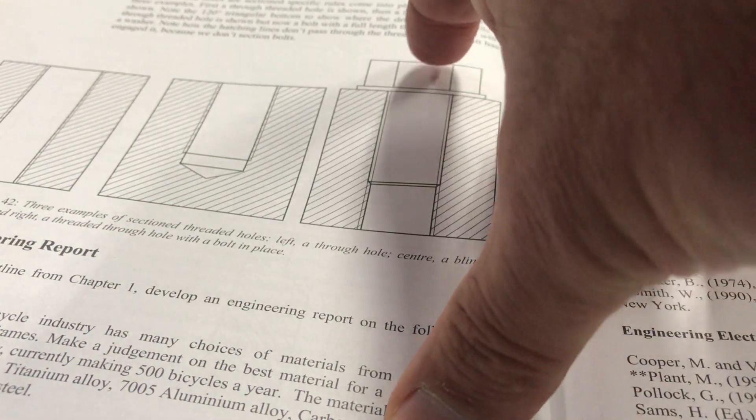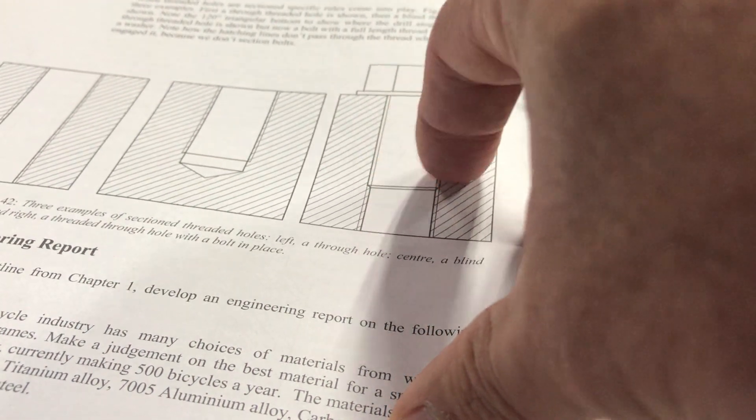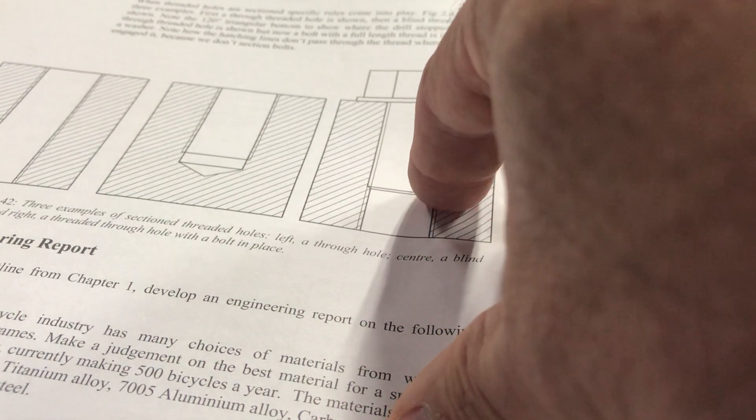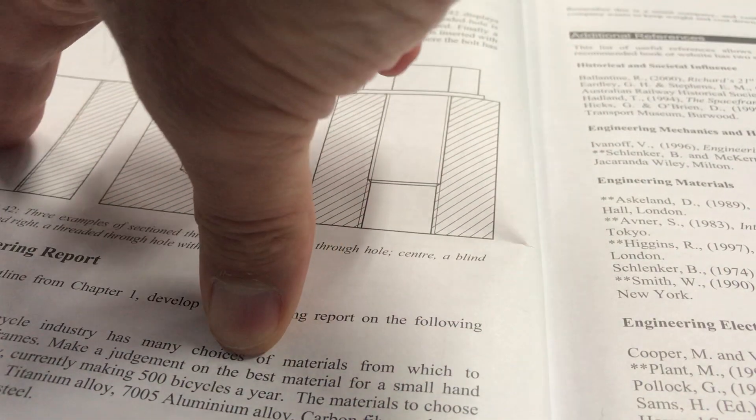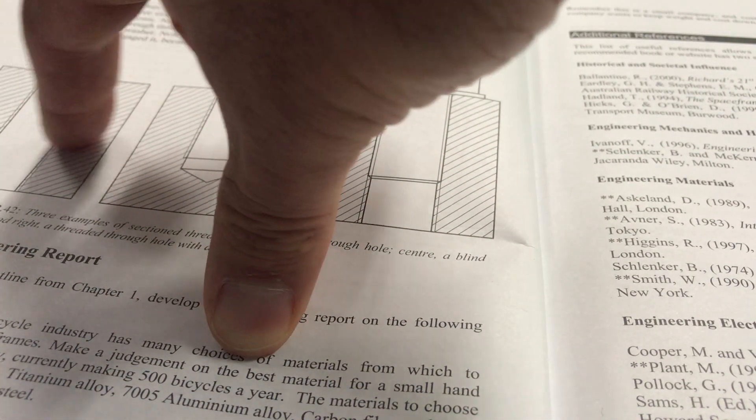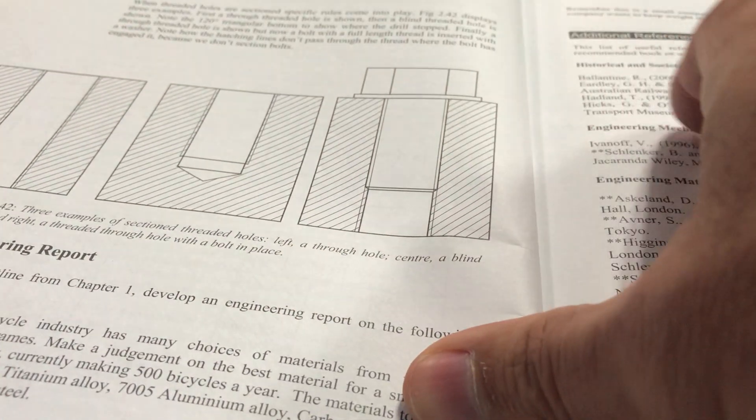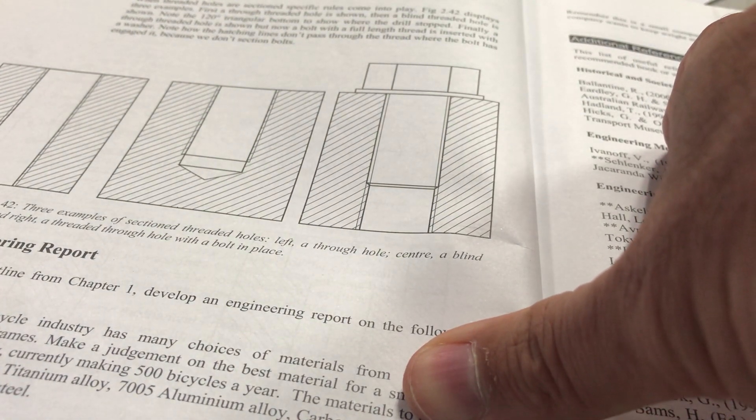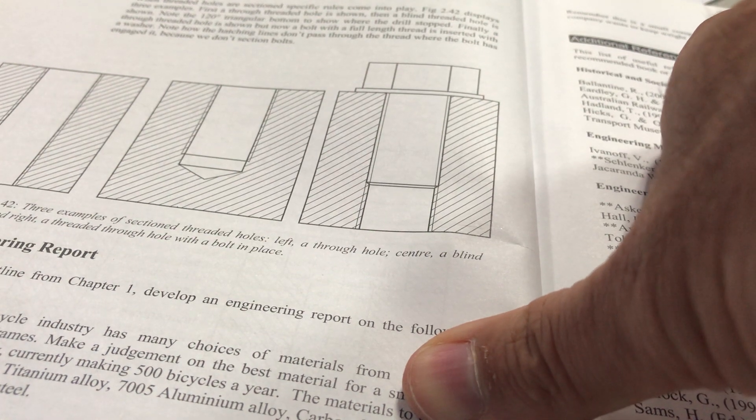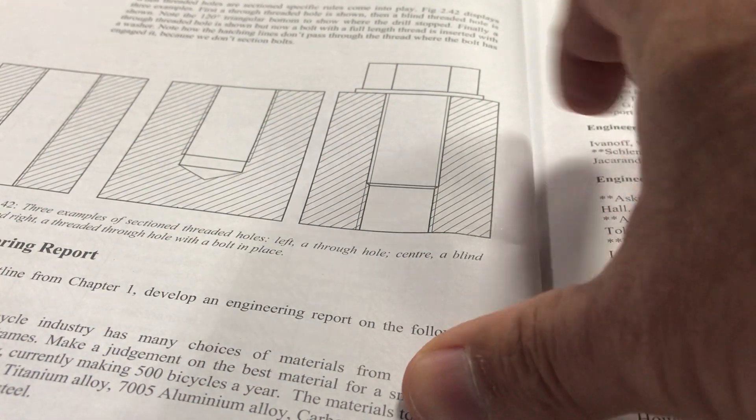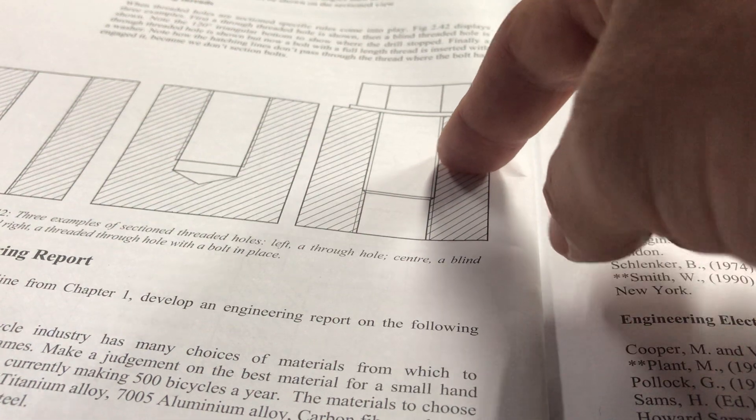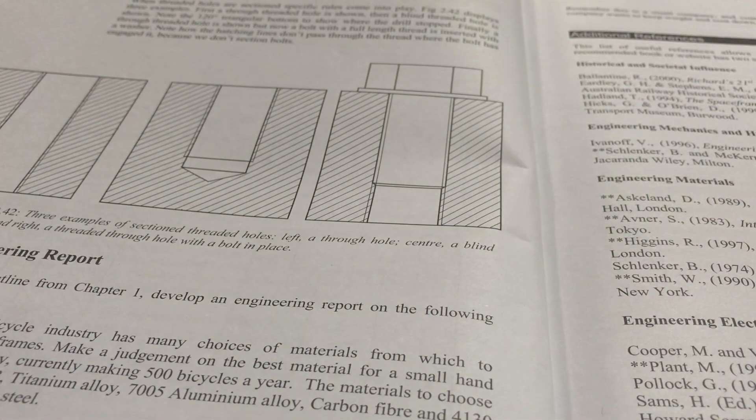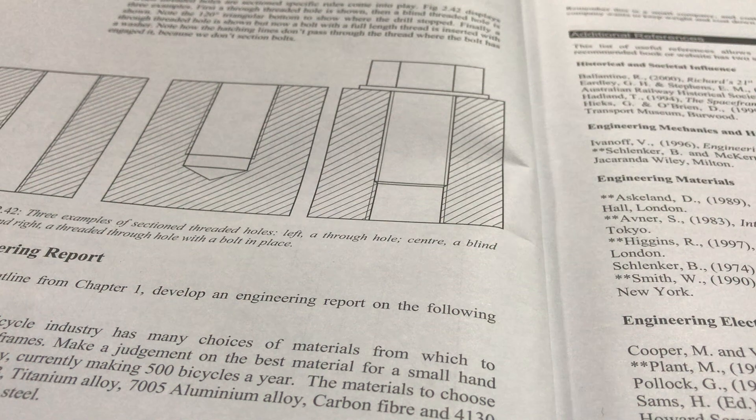So you just got to remember if you've got a bolt that's been screwed into the hole, the hatching doesn't go across the thread line. But if you've got no bolt in the hole, hatching goes across the thread line. It's a little point, but if you ever get a diagram in an HSC examination where they actually have a bolt inside the hole or inside the assembly and you hatch across the thread line because you think that's the right thing to do, you might lose a mark. So it's food for thought.